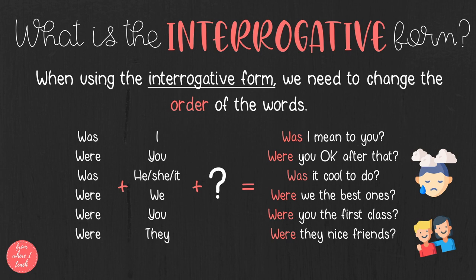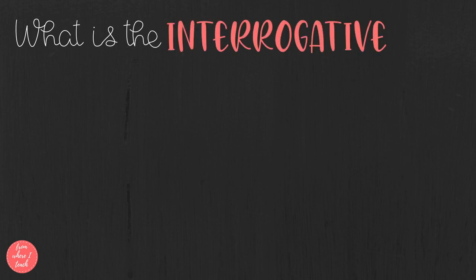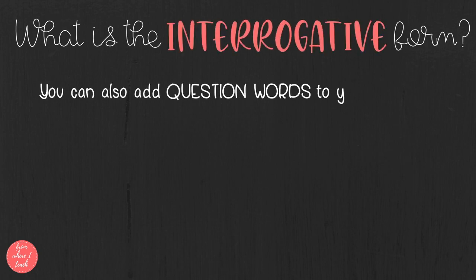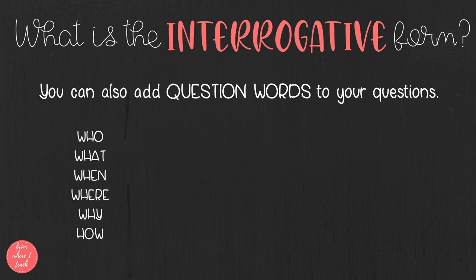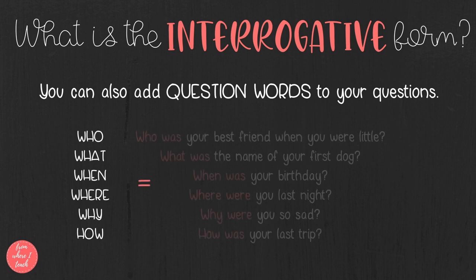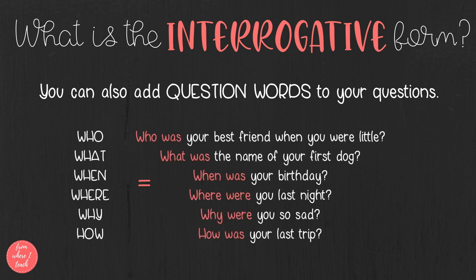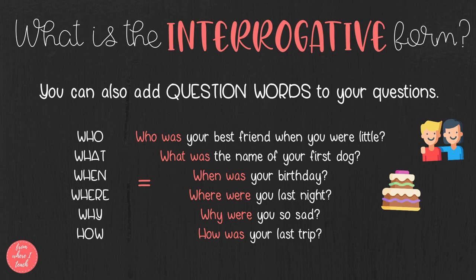With the interrogative form, we can also add question words at the beginning: who, what, when, where, why, and how. For example: What was the name of your first dog? When was your birthday? Why were you so sad? How was your last trip?